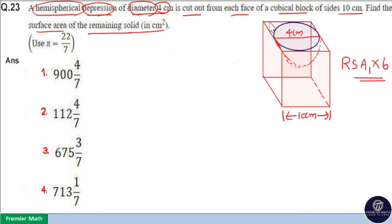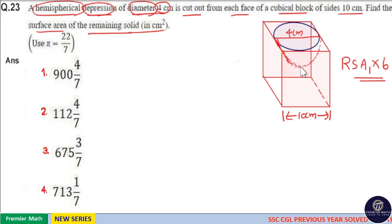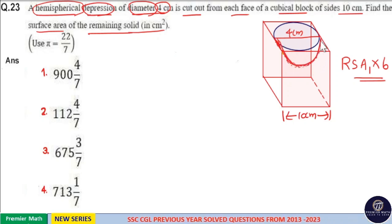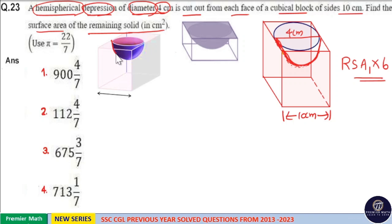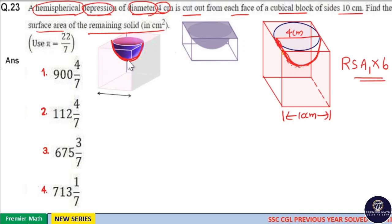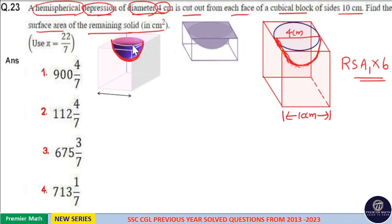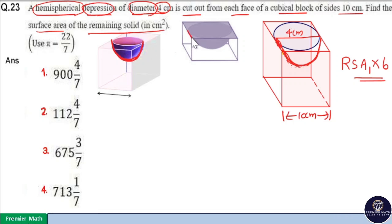Take the top face. When you remove this hemispherical depression, you will create an additional curved surface area. If you look at this image, you will understand. This bowl-shaped structure is the hemispherical depression. When you remove this solid structure from the top face, you will create a curved surface area — an additional curved surface area — which is also part of the remaining surface area.